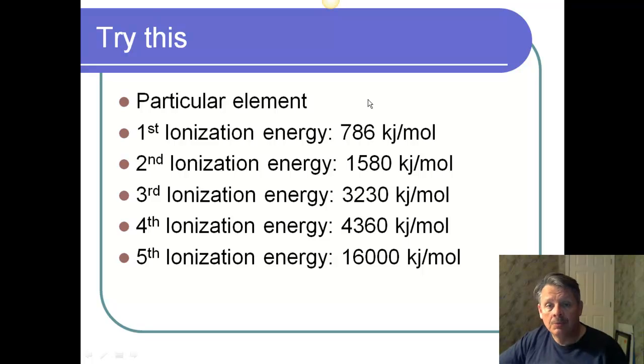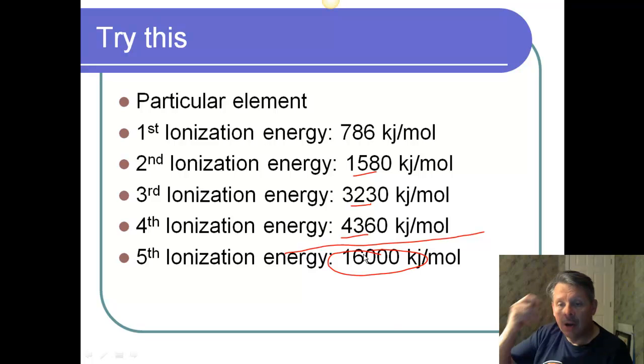Let's look at this one. Well, your first ionization energy is 700, 800. The next one is 1,500. The next one is 3,200. The next one is 4,300. Okay, 1,000 a pop. Oh, wait a minute. Look what happens here. Look at that 16,000. Right? I didn't just go up by another 1,000. I went up by another, what, 12,000? That's huge.